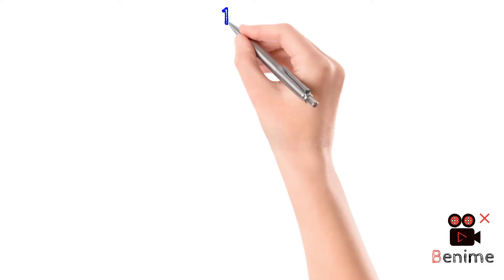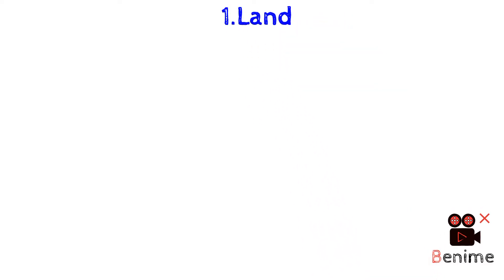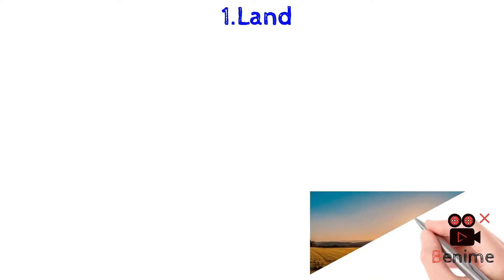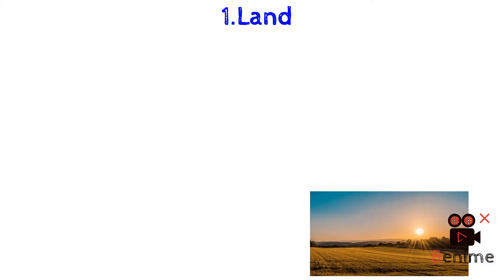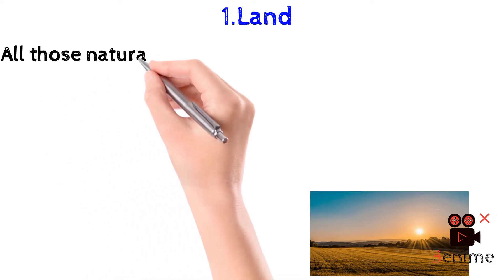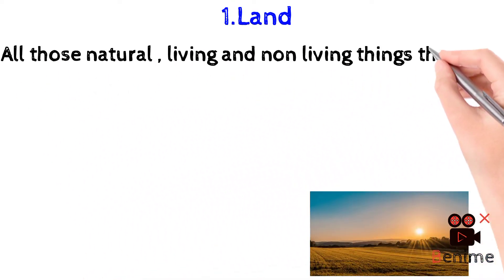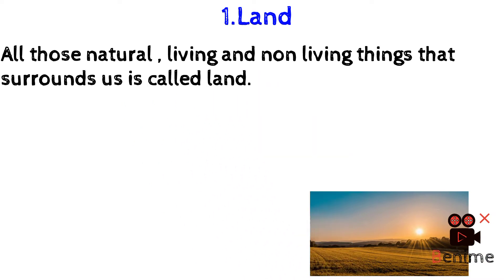Now we will briefly explain all four factors of production step by step. Number one is land. If we go by the definition of land, its definition is different in the context of economics. In economics, all those natural, living and non-living things that surround us are called land. It means all places of earth are called land in economics — rivers, mountains, bridges, and roads are all called land in economics.